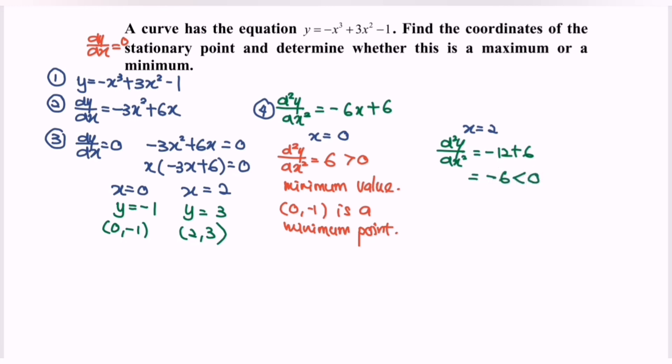So the value of x = 2 is a maximum value. Or we can say the point (2, 3) is a maximum point.